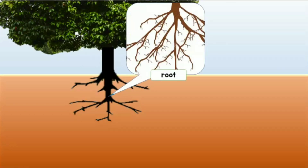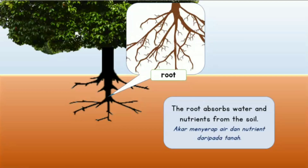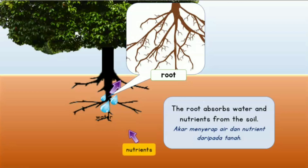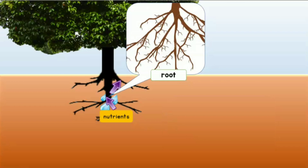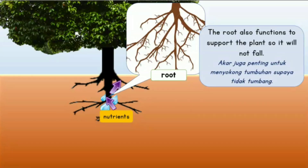Batang berfungsi mengangkut air dan nutrient dari tanah. The root also functions to support the plant so it will not fall. Akar juga penting untuk menyokong tumbuhan supaya tidak tumbang.